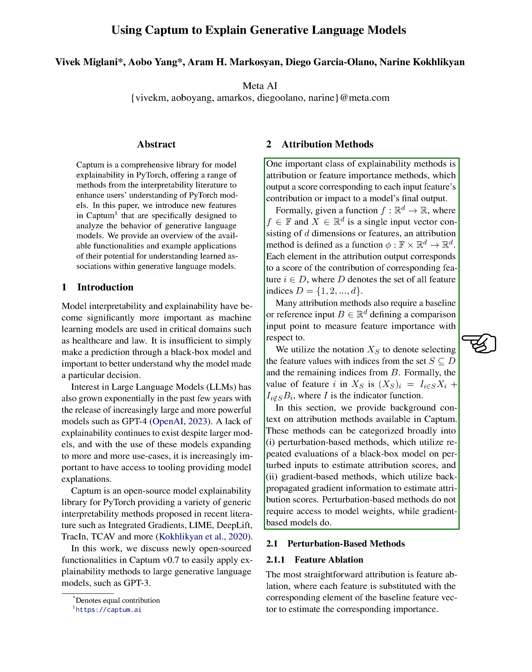One key type of interpretability method is attribution or feature importance methods. These methods give a score to each input feature, showing how much it contributed to the model's final output. If we have a function that takes an input vector with d dimensions or features, an attribution method gives a score to each feature's contribution. Many attribution methods also need a baseline or reference input to compare feature importance. We use the notation X underscore S to denote selecting feature values with indices from the set S and the remaining indices from the baseline.